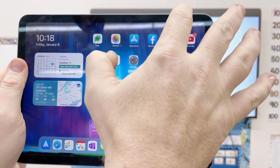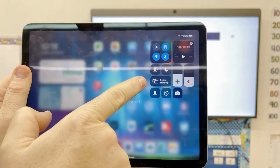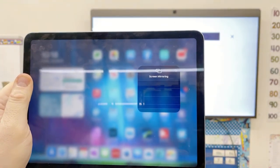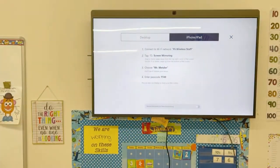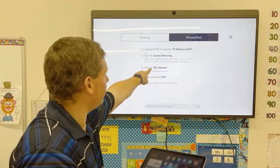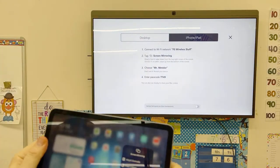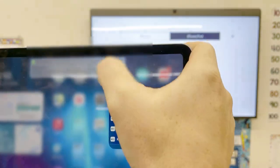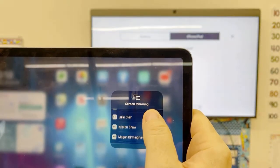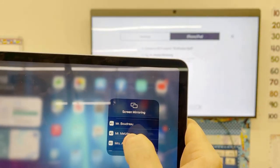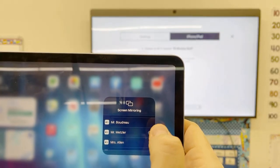So on the top right, you start just off the screen and you swipe down, and you'll see the Screen Mirroring option. When I tap on that, you're going to look in the list for that Mr. Metzler. So I'm going to scroll through my list, and you'll see Mr. Metzler right there. I'm going to tap on that.